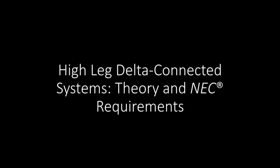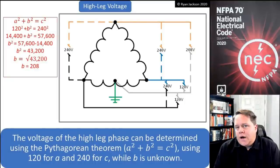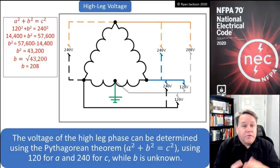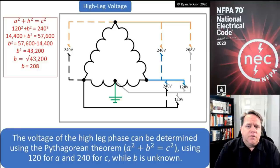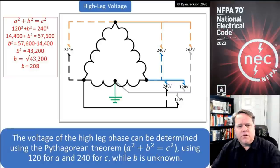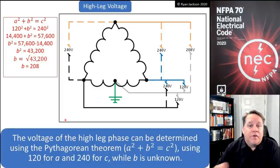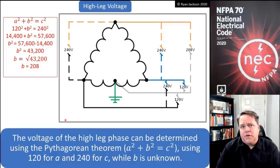Hello everyone, hope you're doing well. Ryan Jackson here. Today we're going to be talking about high leg connected systems theory and NEC requirements. A high leg Delta — first thing to understand is that it is a Delta; there's no such thing as a high leg on a Y connected system. What we're looking at here is a Delta connected transformer, and what makes this a high leg is the grounding configuration.